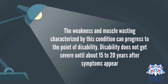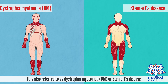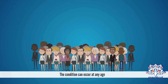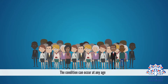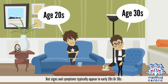Disability does not get severe until about 15 to 20 years after symptoms appear. It is also referred to as dystrophia myotonica, or DM, or Steinert disease. The condition can occur at any age, but signs and symptoms typically appear in the early 20s or 30s.